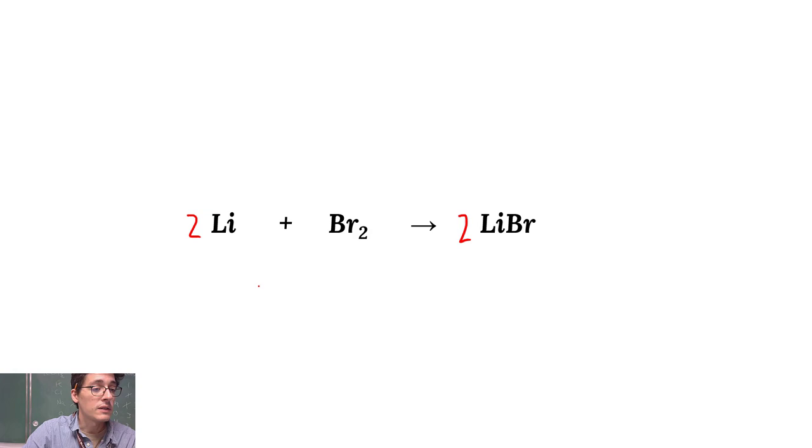When we're determining the type of reaction, I like to look at the structure. So we have two reactants and only one product. There's only one reaction type that matches this, and this is a synthesis. So synthesis reactions take multiple reactants and combine them into a single product. So we've got multiple things on the left, only one thing on the right has got to be a synthesis.